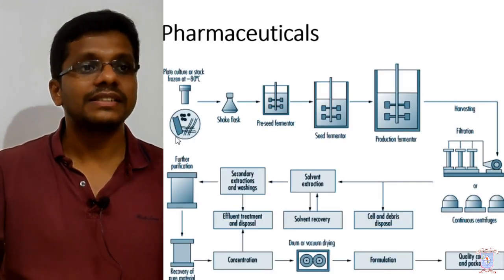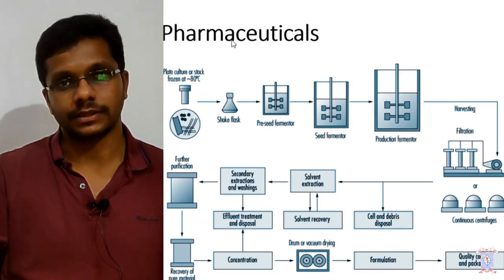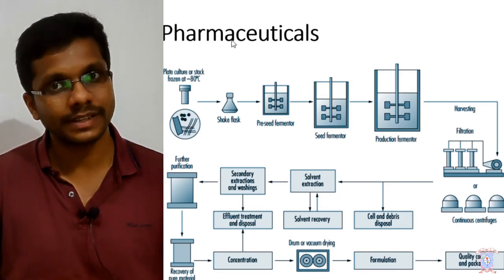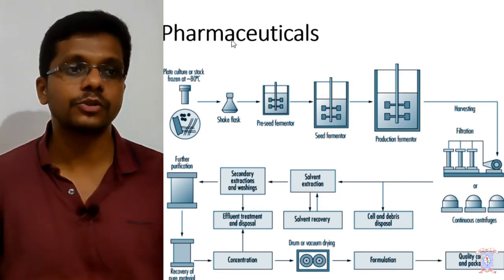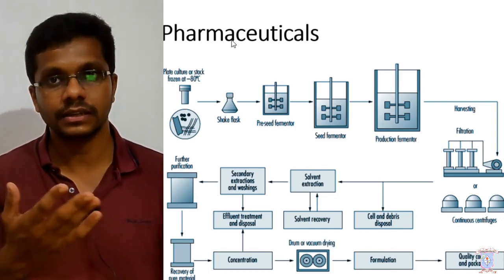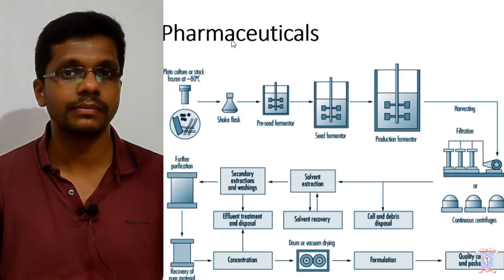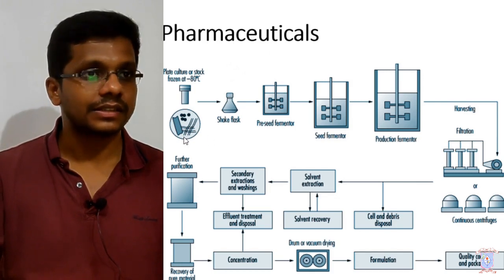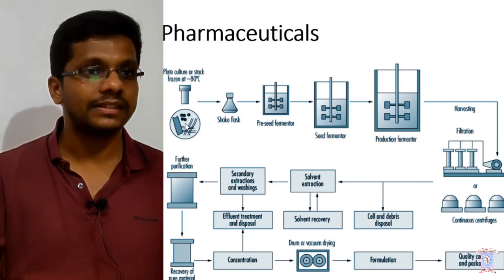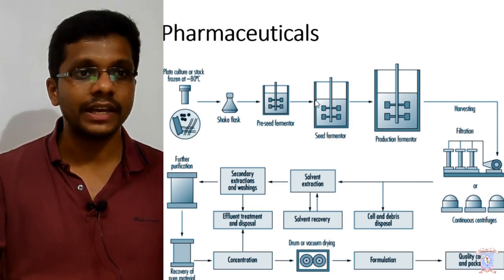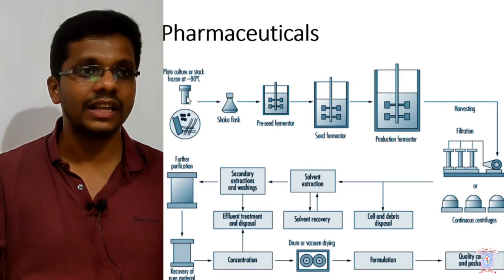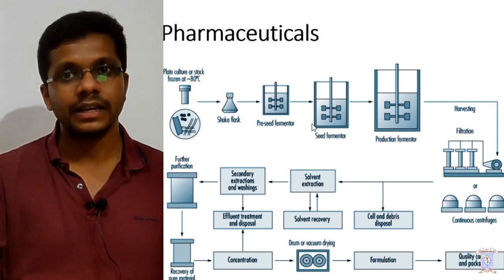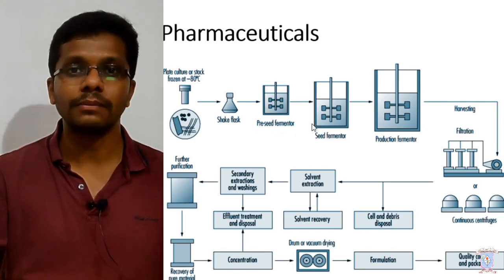This is a typical flowchart of a pharmaceutical production. This pharmaceutical can be a secondary metabolite like antibiotics such as penicillin and streptomycin, or this flowchart fits the production of recombinant proteins like insulin and growth hormone produced from E. coli — so it's a general representation. The fermentation starts from a pure culture which is stored, and this culture is step by step developed into a seed fermenter: first in a small vial, then in a shake flask, then into a pre-seed fermenter, then to a seed fermenter.